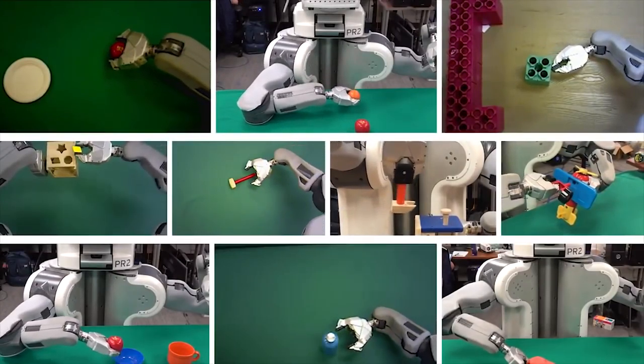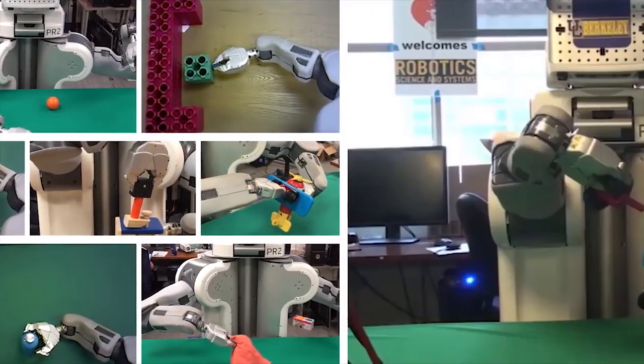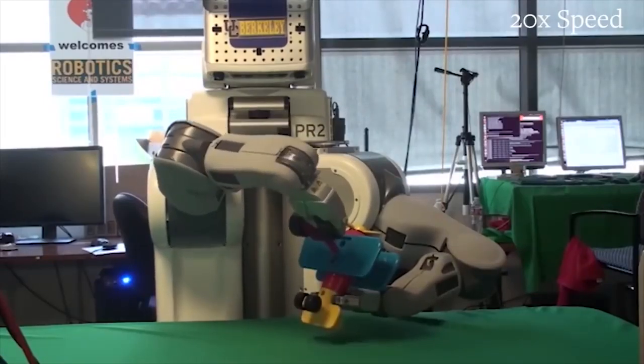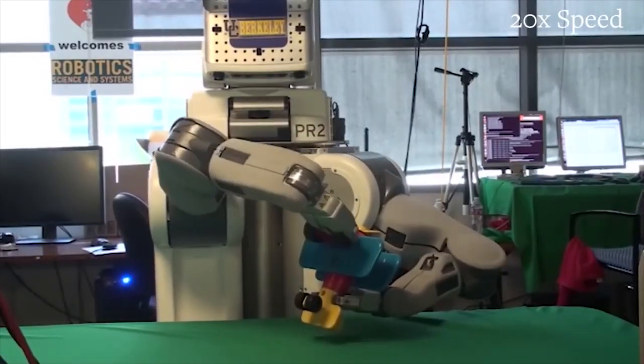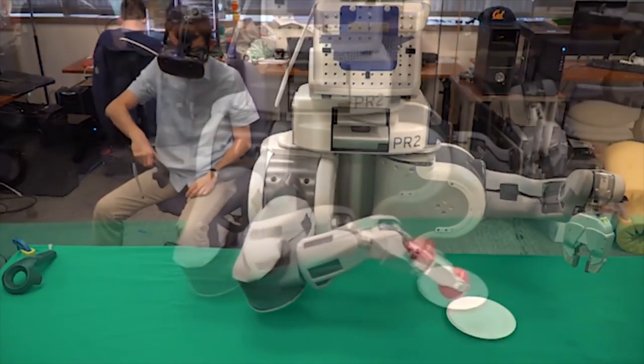Brett learned how to do ten different tasks this way. It seems like only yesterday that Brett needed a lot more programming and time to get that toy airplane piece into place. And now, more grown up, Brett just needs to be shown how it's done, and he's off on his own.